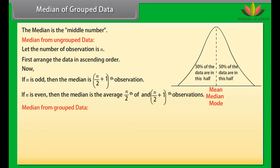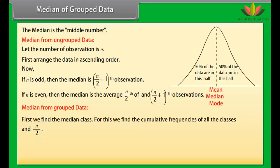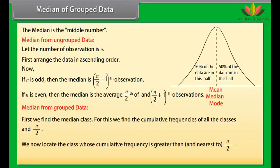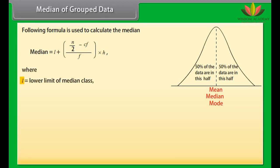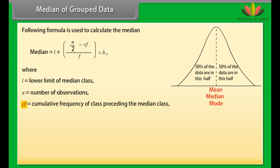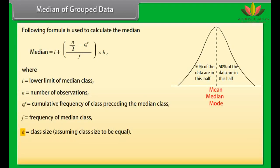For median from grouped data, first find the median class by computing cumulative frequencies and n/2. Locate the class whose cumulative frequency is greater than and nearest to n/2 — this is the median class. The formula for median is: L plus [(n/2 minus cf) divided by f] multiplied by h, where L is the lower limit of the median class, n is the number of observations, cf is the cumulative frequency of the class preceding the median class, f is the frequency of the median class, and h is the class size.